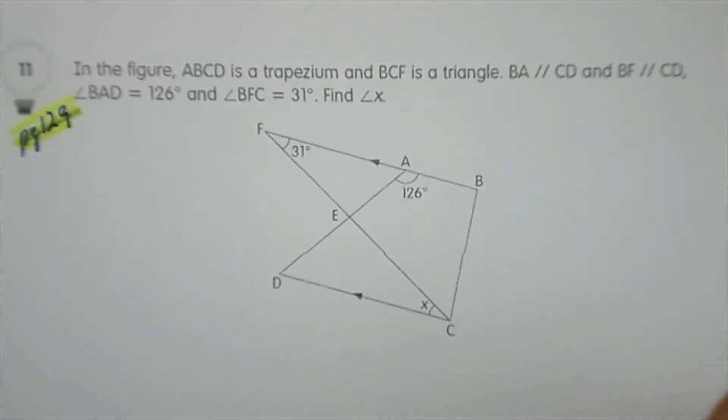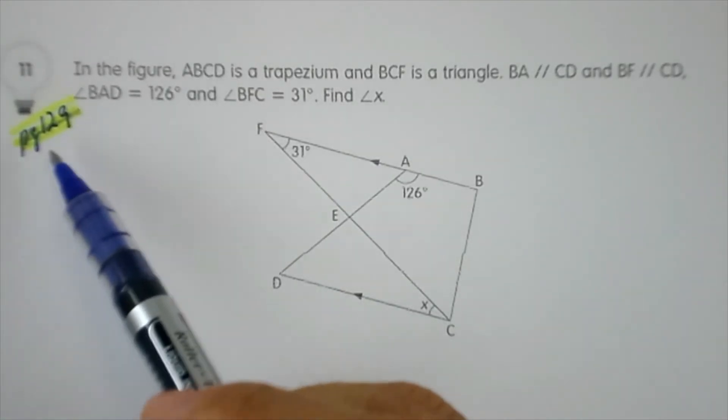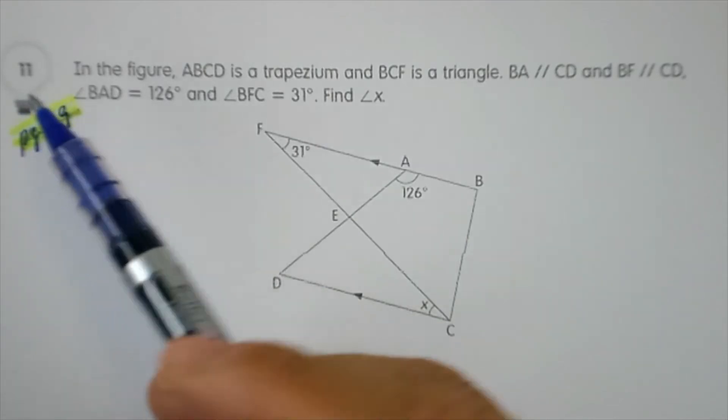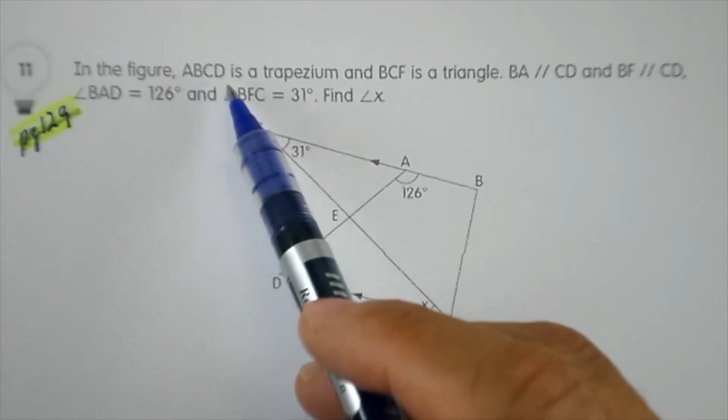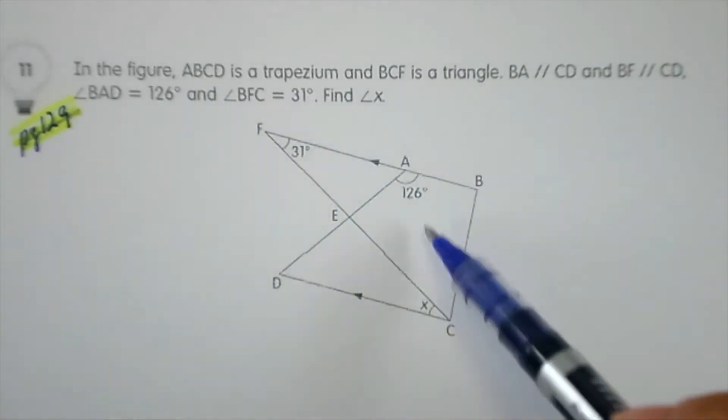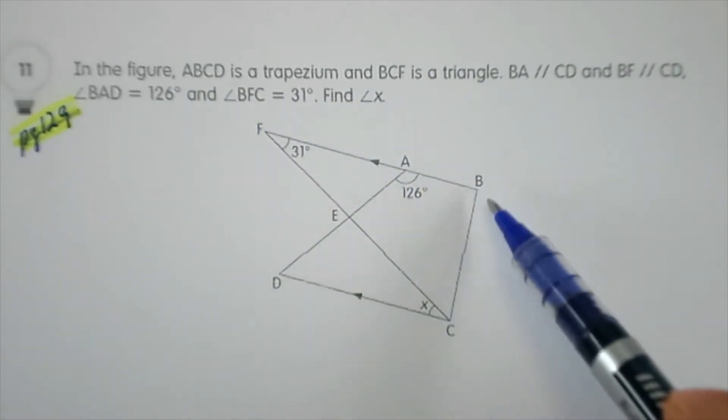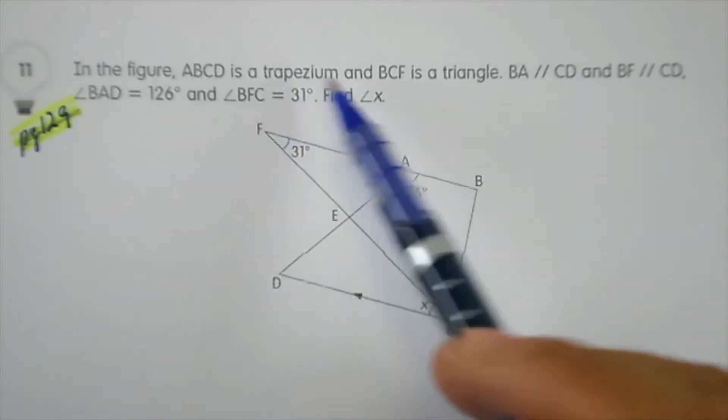Let's look at textbook example page 129, number 11. The question reads: in the figure, ABCD is a trapezium. Where is ABCD? ABCD is a trapezium.